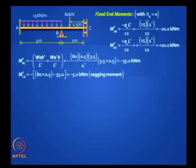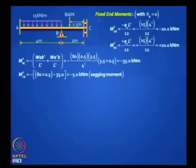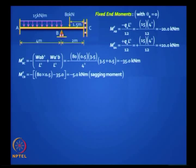You need to take the effect of not only this load but also the other load on the double span with correct values of a and b. Then before the distribution table, write down the distribution factors and carry-over factors. K_BA to K_BC is 4EI/L to EI/L because you are dealing with cantilever behavior for span BC. It comes to 2/3 to 1/3. Carry-over factor to A is plus half; to C it is minus 1 because it is a cantilever. Only three carry-over factors are possible: 0 for a simple support, plus half for a fixed support, or minus 1 for a guided fixed support.